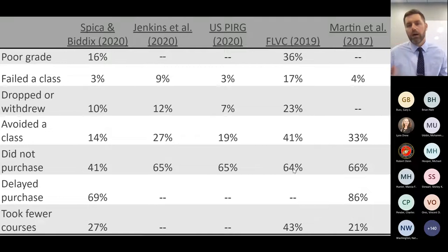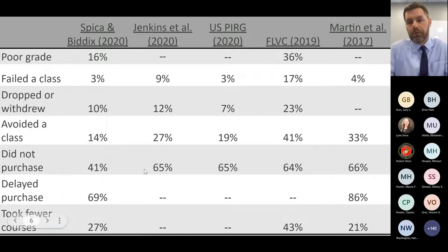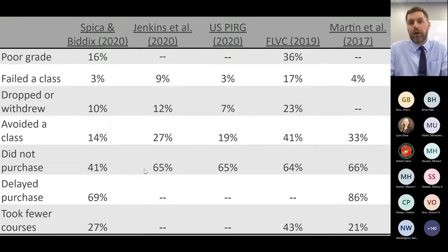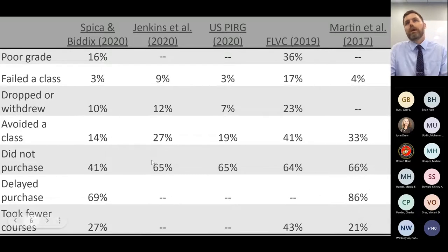These studies are from different populations at different times and places, but there are some interesting parallels we cannot miss. According to the majority of these studies, two thirds of students are not purchasing required course materials. That's pretty significant. Students come to college to learn, and faculty select textbooks because they believe those materials contribute to student learning. Two thirds of students are regularly choosing not to purchase those course materials — that's a challenge.